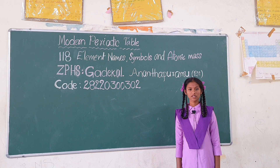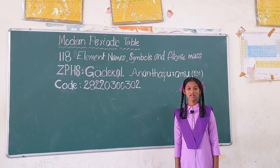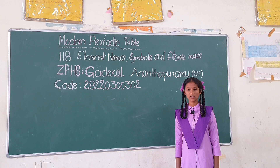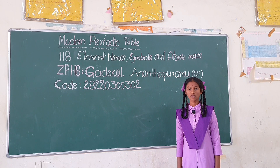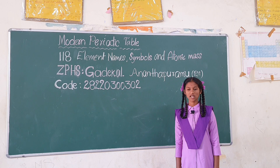Hydrogen H 1.008, Helium He 4.003, Lithium Li 6.94, Beryllium Be 9.012, Boron B 10.81, Carbon C 12.01, Nitrogen N 14.01.